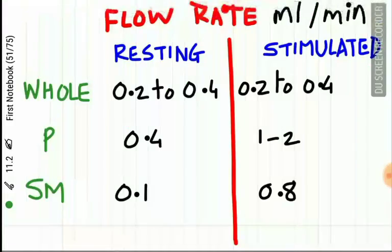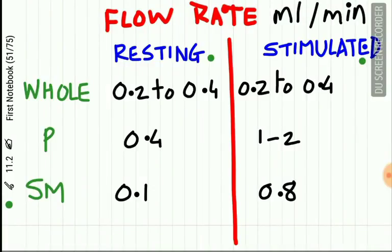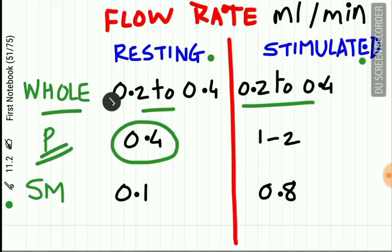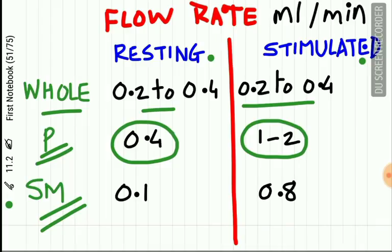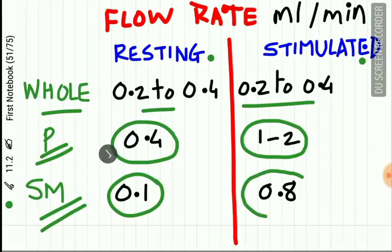In the parotid gland, the resting flow rate is 0.4 ml per minute, rising to 1 to 2 ml per minute when stimulated. In the submandibular gland, the resting flow rate is 0.1 ml per minute, while the stimulated rate is 0.8 ml per minute.